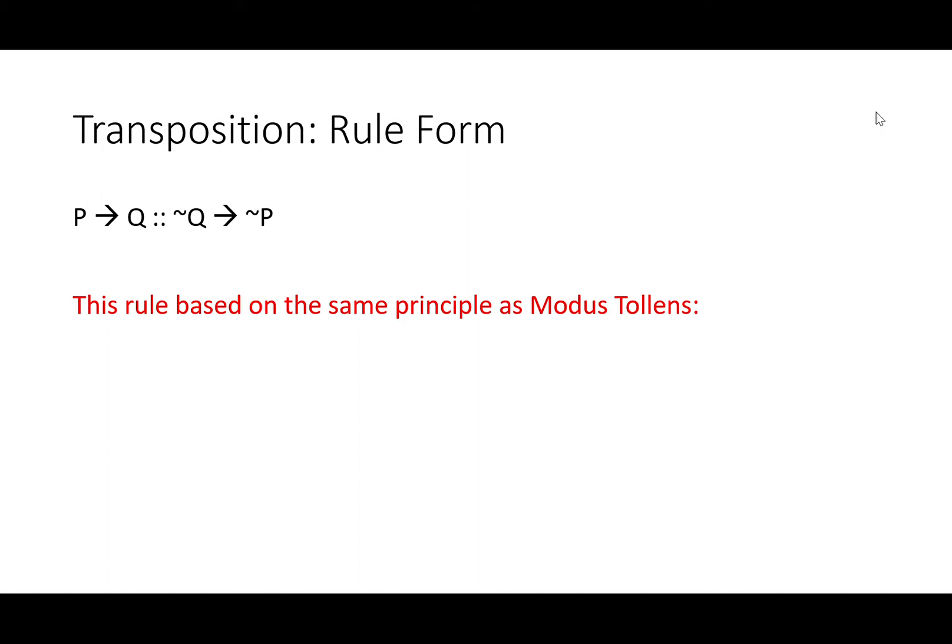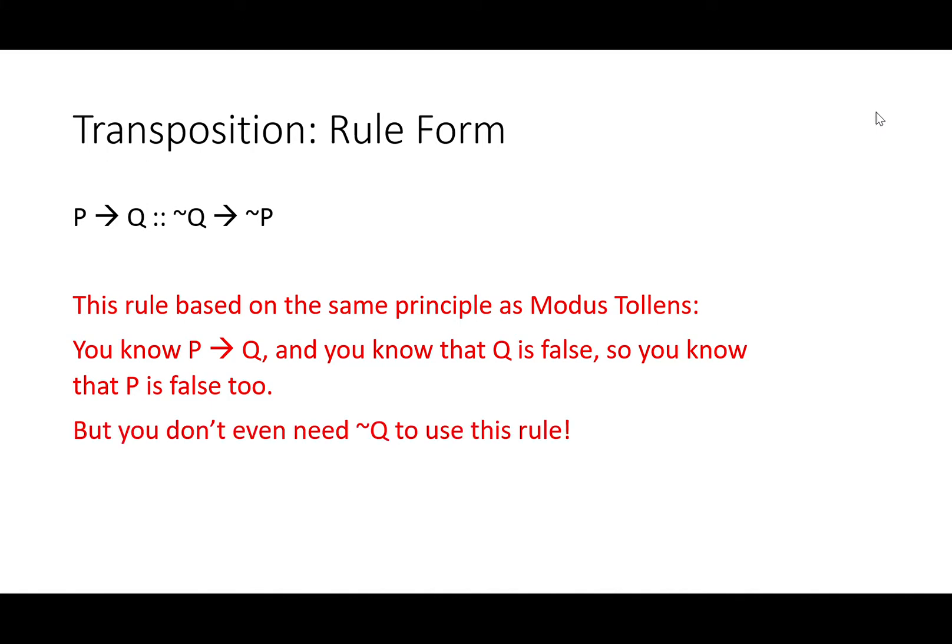This rule is based on the same principle as modus tollens. You know that you've got if P then Q. So if you know that Q is false, you know that P is false too. The trouble with modus tollens is that you need to know that Q is false. With this rule, you don't. You know that if Q is false, you're going to get not P based on modus tollens, so this rule allows you to just get that conditional.